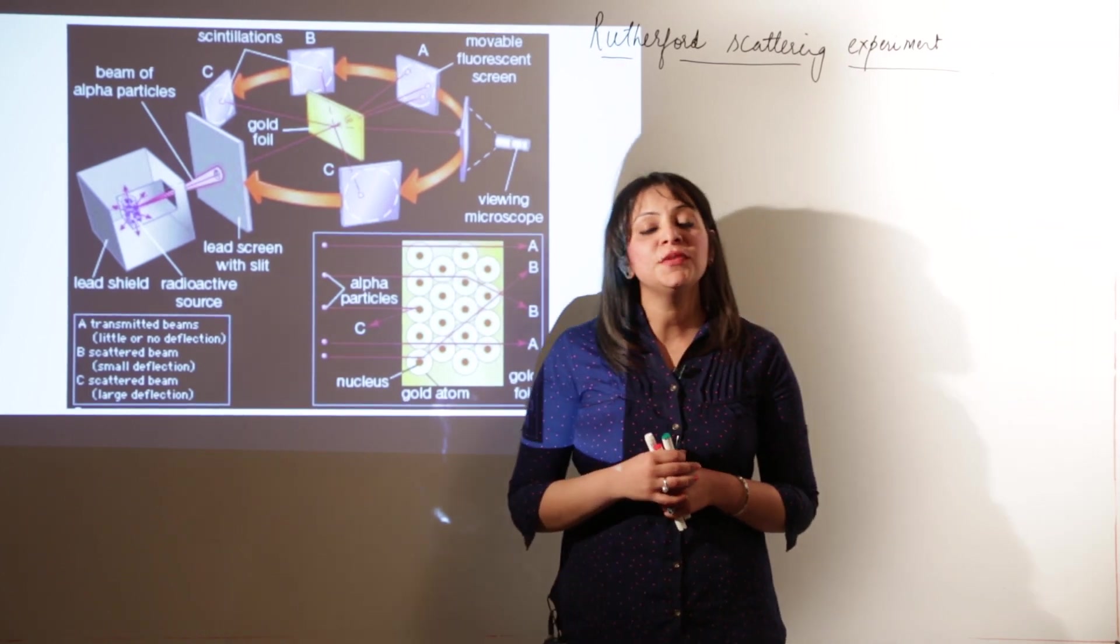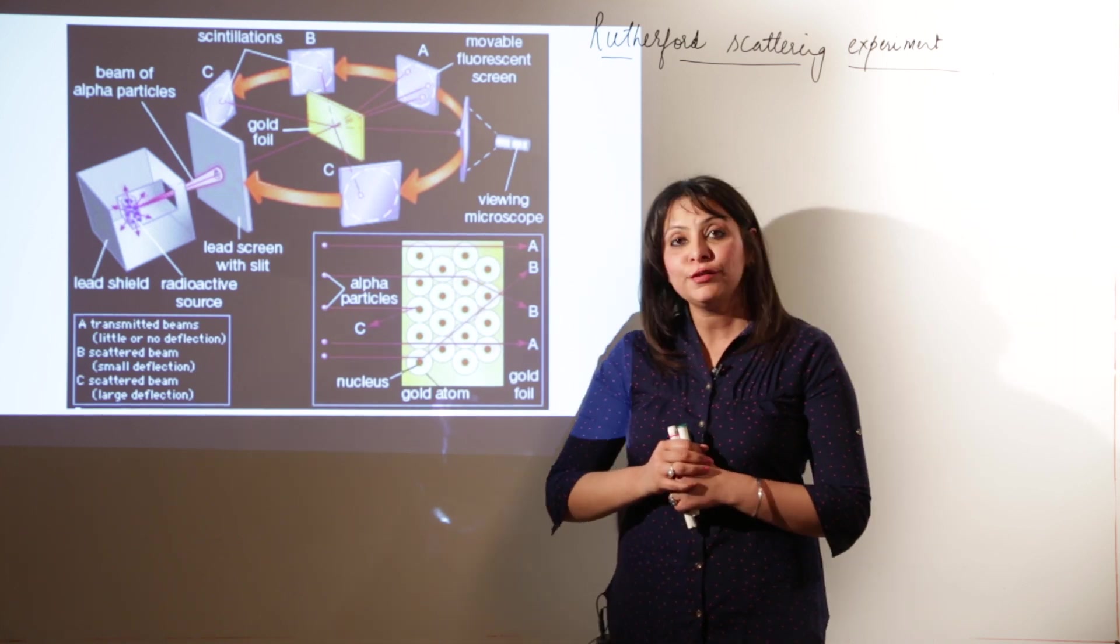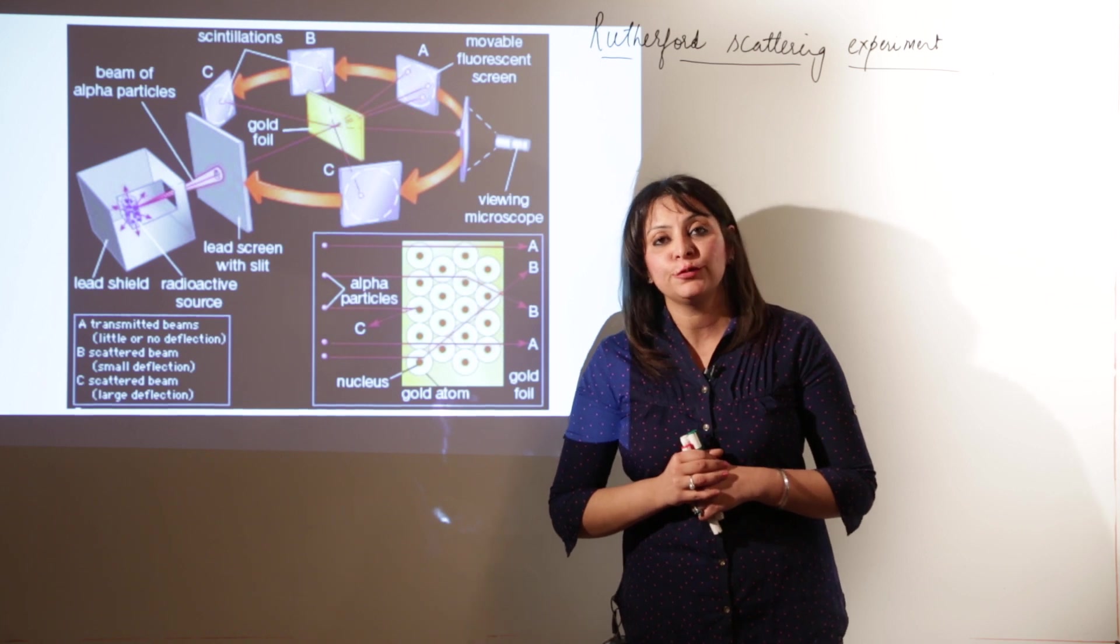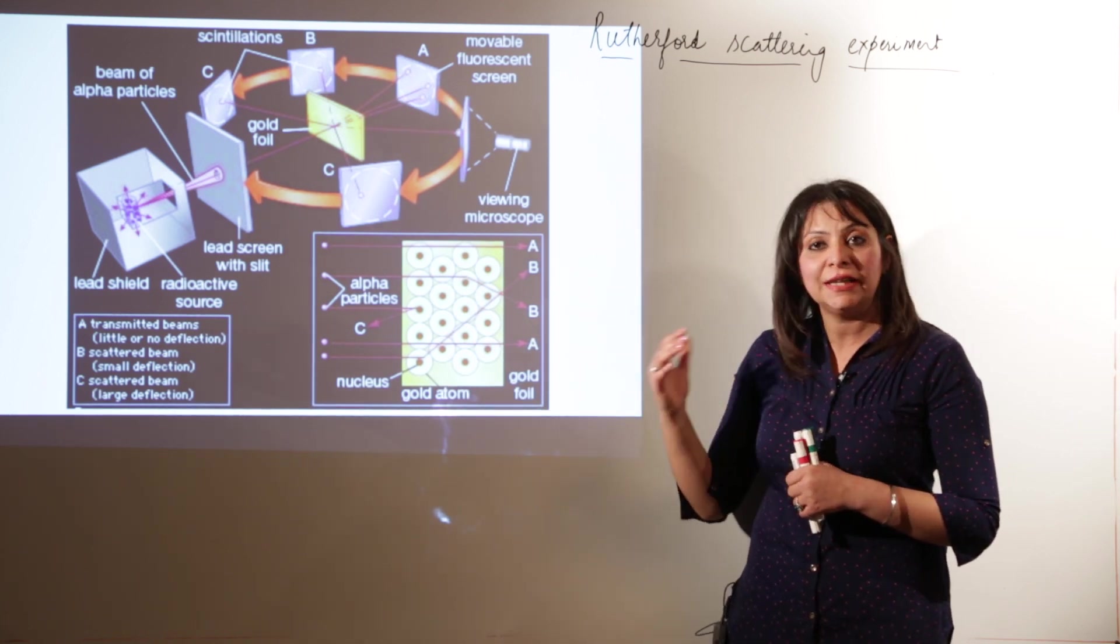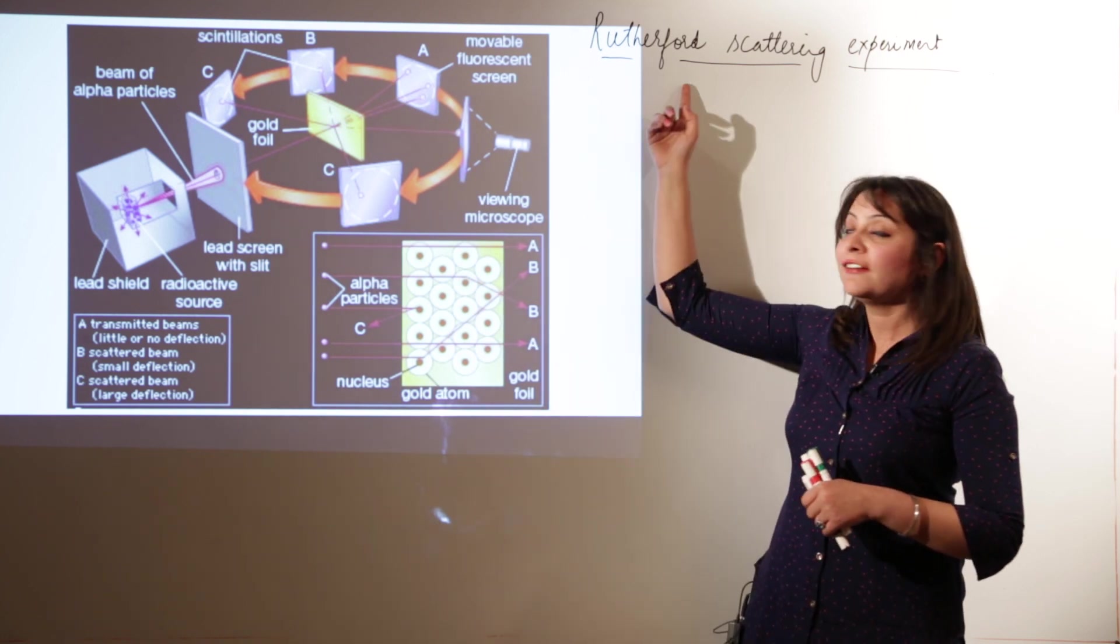As I have told you, Thompson was the one who made an effort to explain the structure of atom, but he failed due to few drawbacks in Thompson's model. So the second attempt was made by Rutherford.